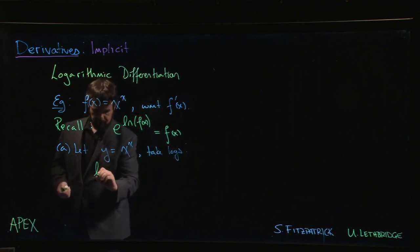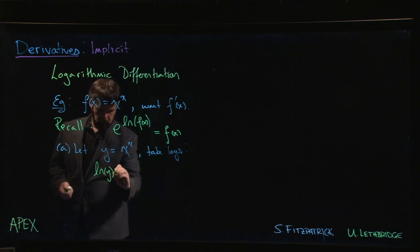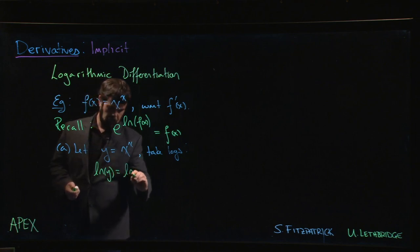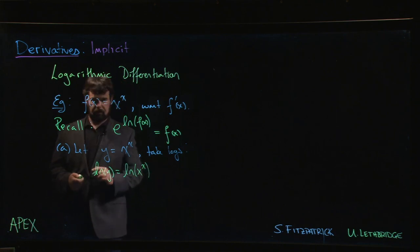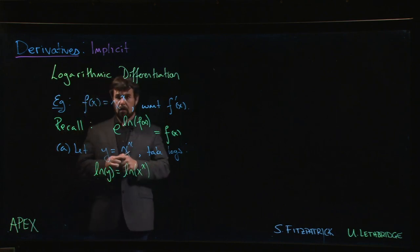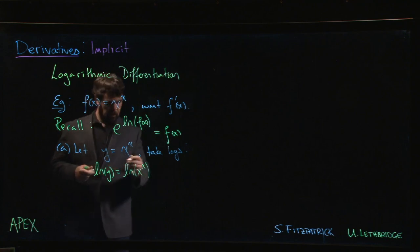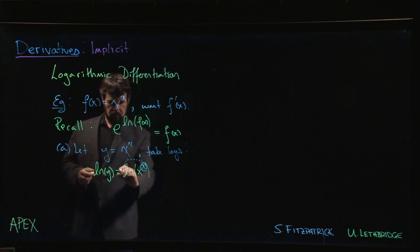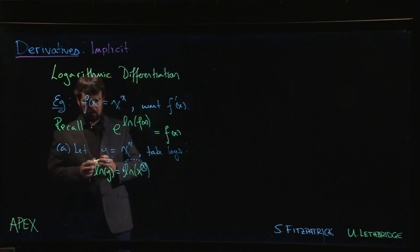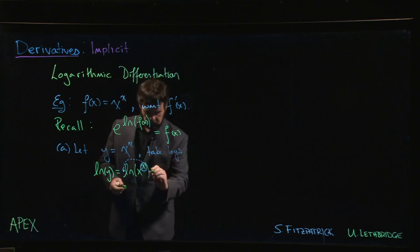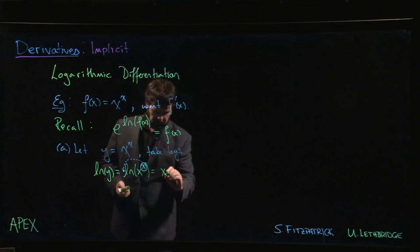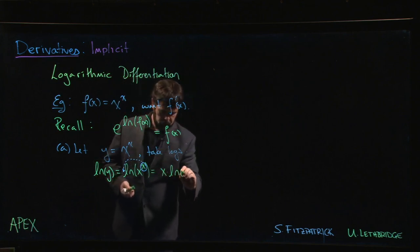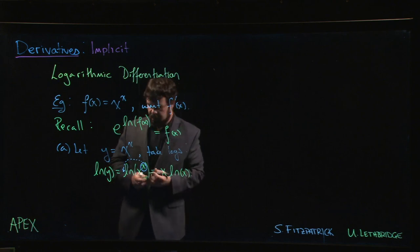What happens? Well, the natural log of y will be equal to the natural log of x to the power of x. But here's a log property that comes in—this exponent we can bring down and put it in front. That gets us to x times the natural log of x.